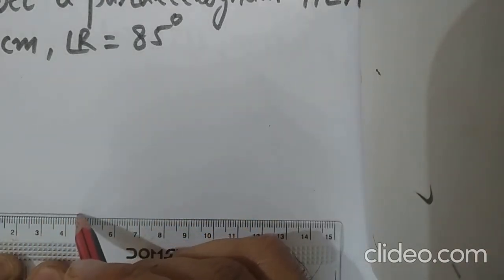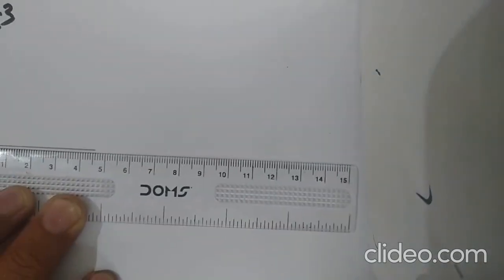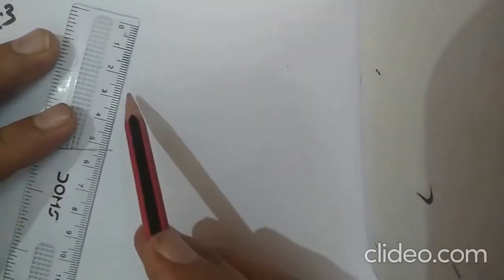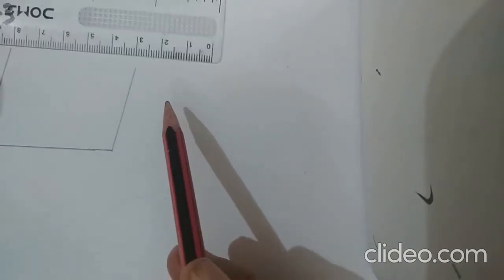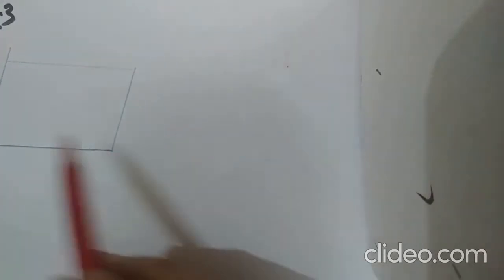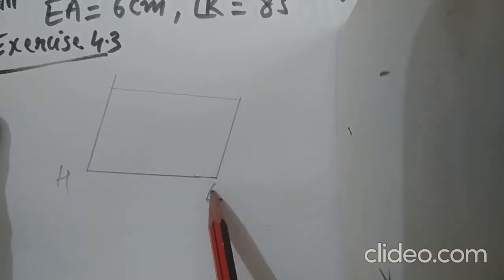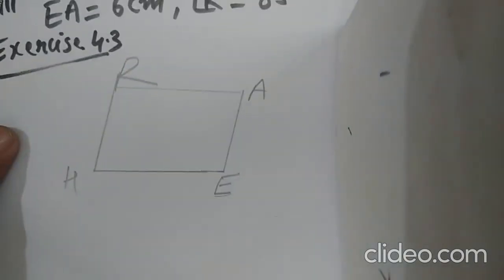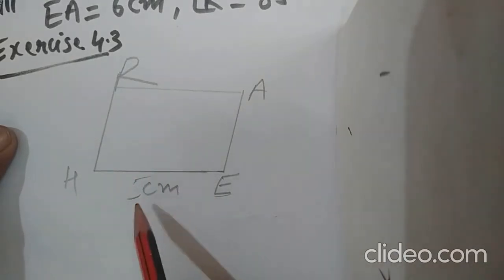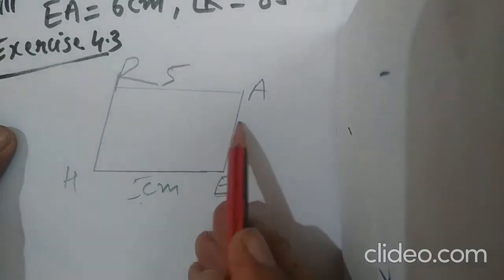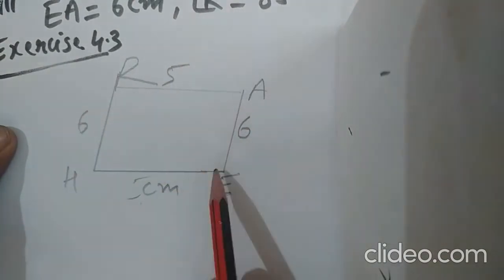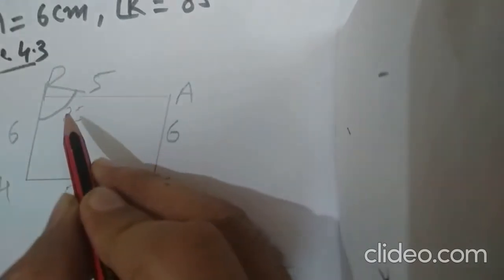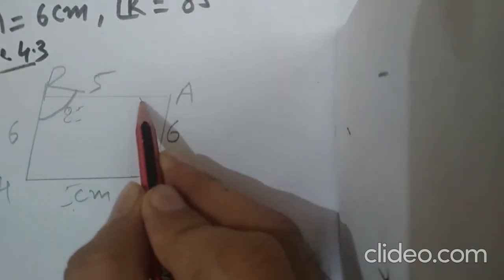I draw HE here — HE is 5 — and I draw a rough one to get the parallelogram shape. In this parallelogram: H is 5, HR is 5, E is 6, HR is 6. Angle R is 85°, and since opposite angles are supplementary, angle A will be 95°.